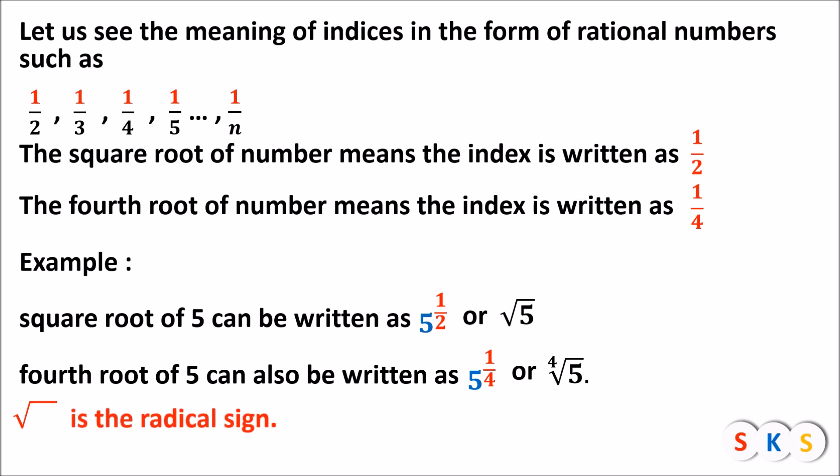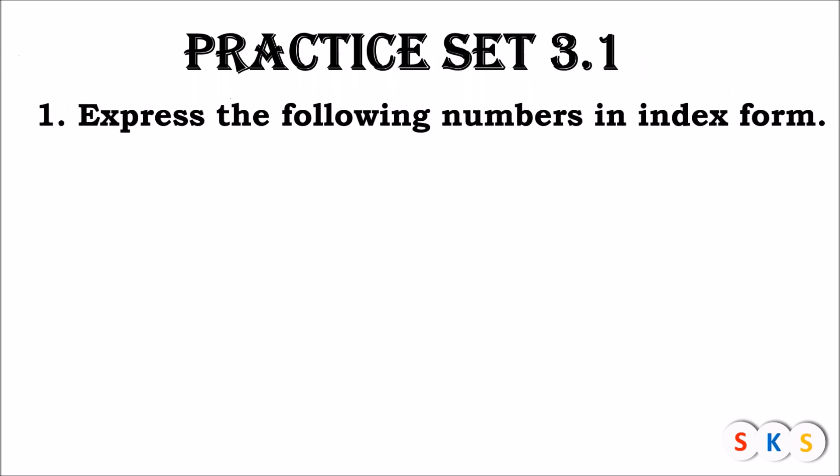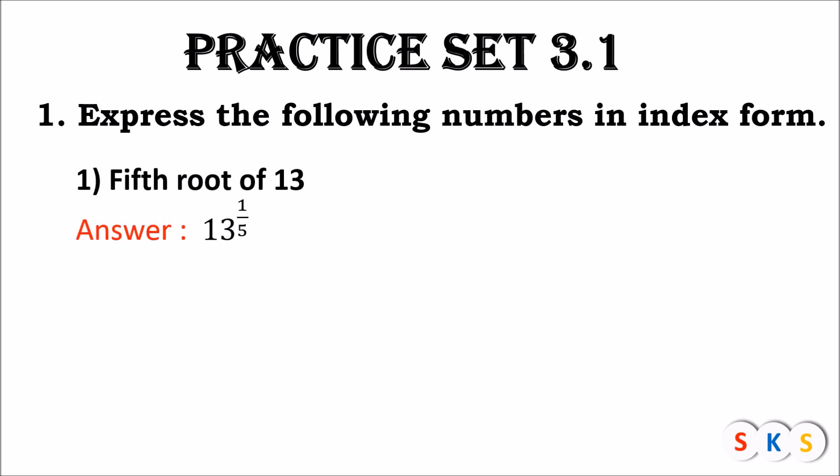Now we will see Practice Set 3.1. Question 1: Express the following numbers in index form. The first sum is the fifth root of 13. Since it is the fifth root, the denominator of the fraction is 5 and the numerator remains 1, so we can write this in index form as 13 raised to 1 upon 5. For the sixth root of 9, the denominator is 6, so the answer is 9 raised to 1 upon 6.